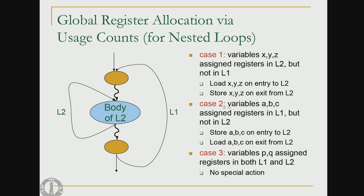Case 2: variables a, b, and c are assigned registers in L1 but not in L2. When we enter L2, the registers corresponding to a, b, and c will be given to other variables — so we need to store their values in memory, then on exit from L2, load those values back into the registers for a, b, and c. Case 3: variables p and q are assigned registers in both L1 and L2 — obviously no special action is required. This completes the usage-count-based algorithm for allocating registers to variables.